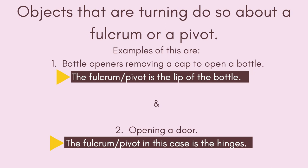Objects that are turning do so about a fulcrum or pivot. Examples of this are bottle openers, removing a cap to open a bottle. The fulcrum or pivot is the lip of the bottle and opening a door. The fulcrum or pivot in this case is the hinges.